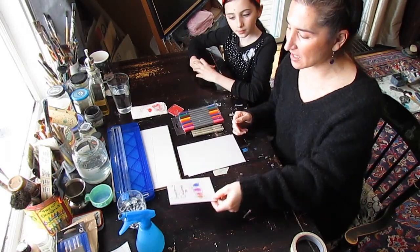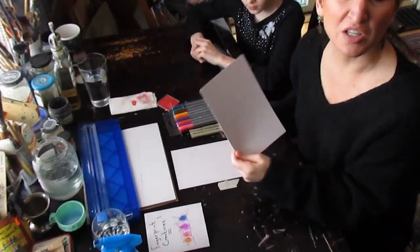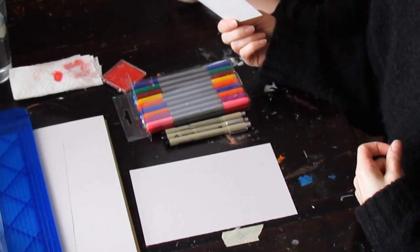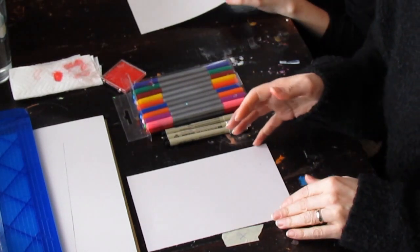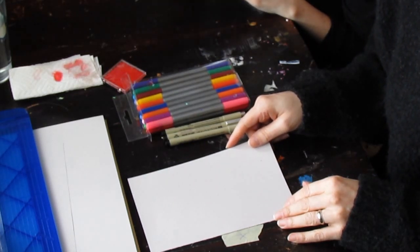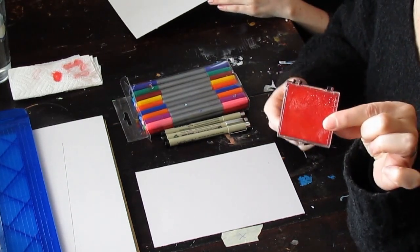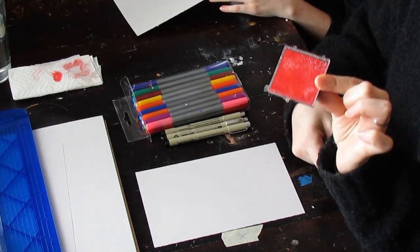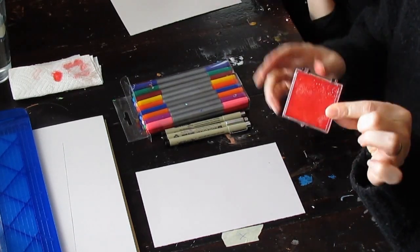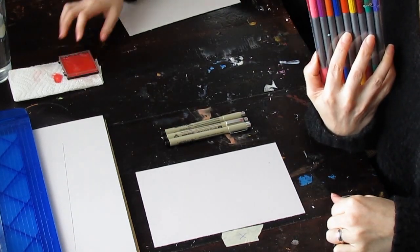So the first thing that we need for this project is some paper. You can use scrap paper, you can use printer paper. If your mom or dad or grandma or guardian has any kind of paper, it will work great. Most people do this project with an ink pad. Our ink pad is a little questionable right now. So instead of using an ink pad because they're kind of tough to come by sometimes, we just like to use markers.